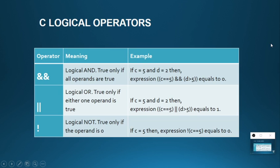Coming to logical operators: these are used to compare between two operands. Logical AND (&&) — if both conditions are true, then only the result is true. Logical OR — if both conditions are false, then only the result is false; otherwise it is true. Logical NOT reverses the result: NOT true equals false, and NOT false equals true.